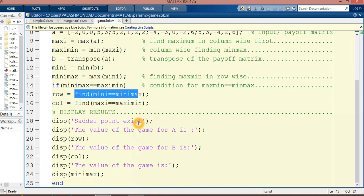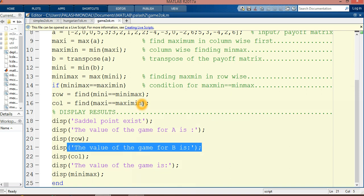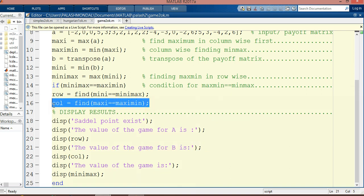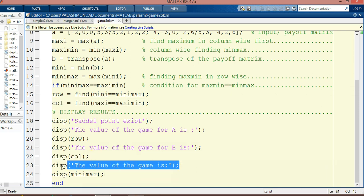Now, display the result. Saddle point exists, obviously exist only. The value of the game is row. Which row? This row. In this row, the value of the game exists. And the value of the game for B, it shows in column wise position. So it is column. Here the column and the value of the game. Value of the game is the min-max. Value of the game may be max-min and it is the end of the programs.